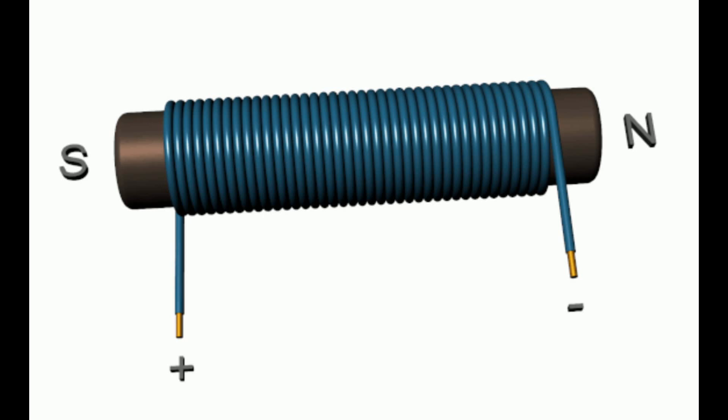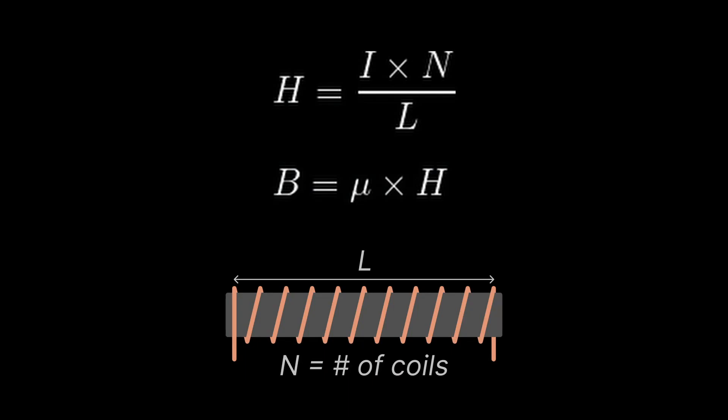We will be demonstrating the linear correlation between the current given to an electromagnet and the strength of the field it produces. Here are some formulas. H is the strength of the magnetic field in the middle of the solenoid. I is the current flowing through the solenoid. N is the number of coils in the solenoid. And L is the length of the solenoid, shown here.